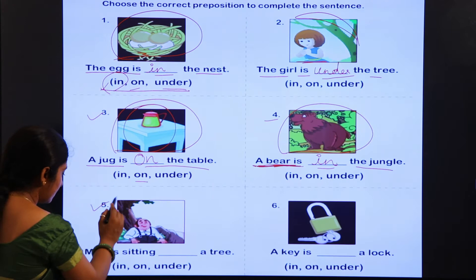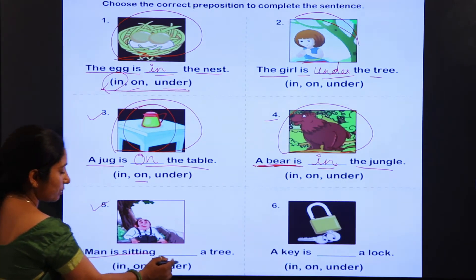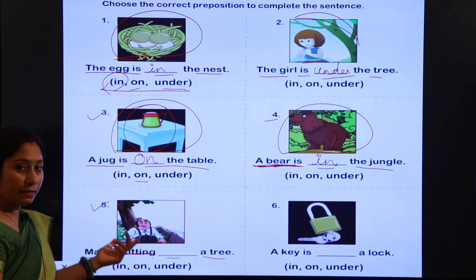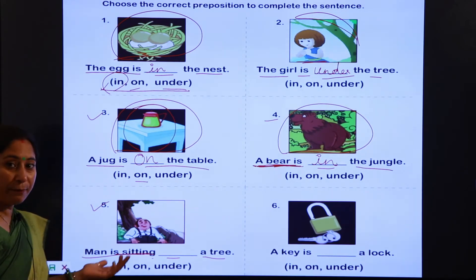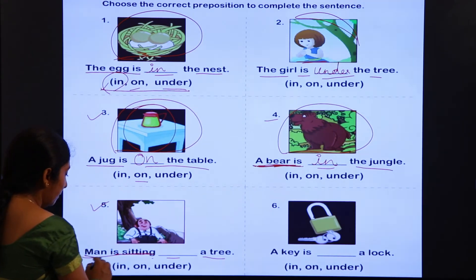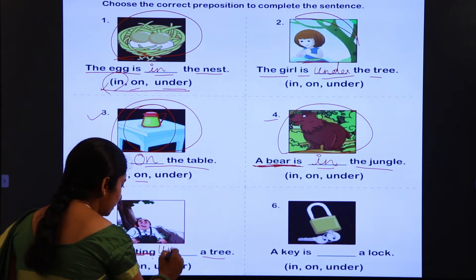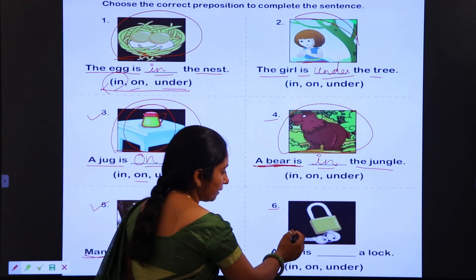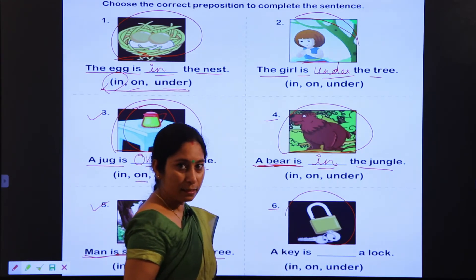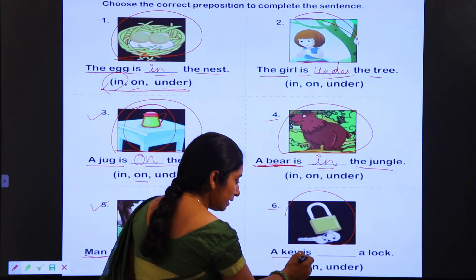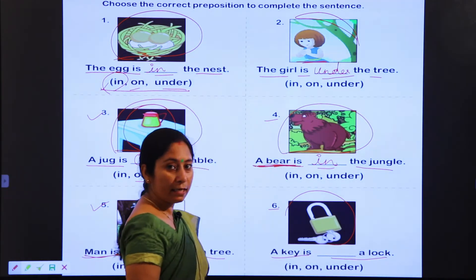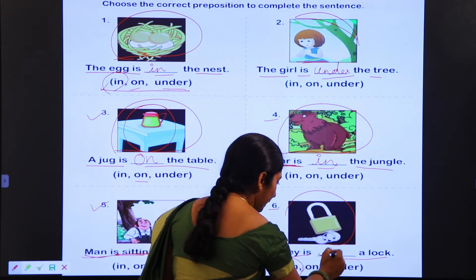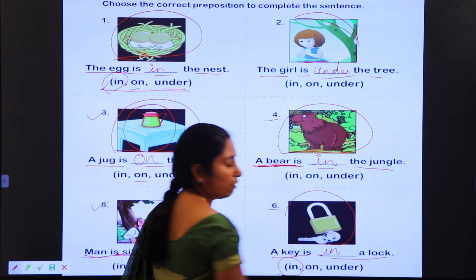Next: man is sitting [dash] a tree — man kahan par hai? Ped ke niche. Toh hum kya likhenge — man is sitting under a tree. Now last: aapko lock aur lock mein keys nazar aa rahi hai. A key is [dash] a lock — key kahan par hai? Lock ke andar. Ke andar ke liye 'in': a key is in a lock.